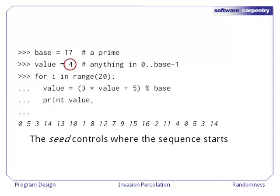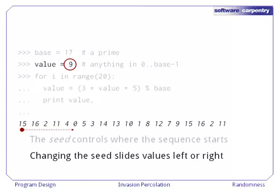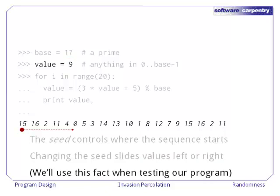The seed controls where the sequence starts. With a seed of four, the sequence starts at the value zero. If we change the seed to nine, all it does is shift the sequence over. We get the same numbers in the same order, but starting from a different place. We'll use this fact later on when it comes time to test our invasion percolation program.